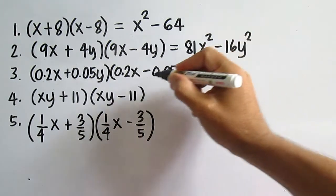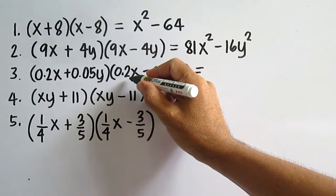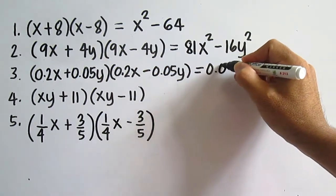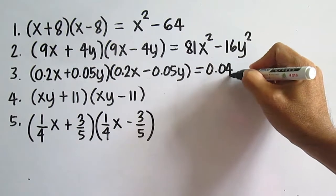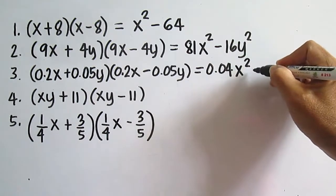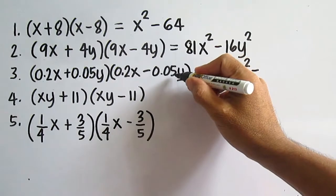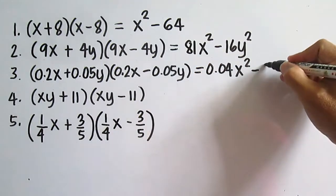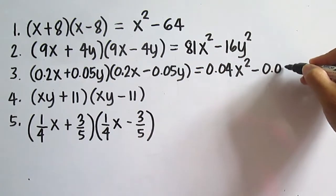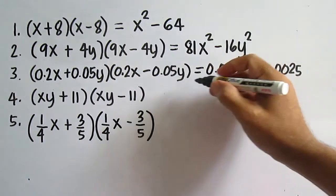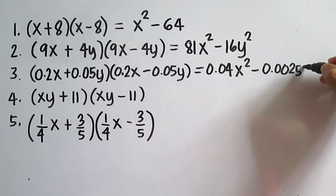Number three: 0.2x times 0.2x is 0.04x squared, minus 0.05 times 0.05 is 0.0025, and y times y is y squared, giving 0.04x squared minus 0.0025y squared.